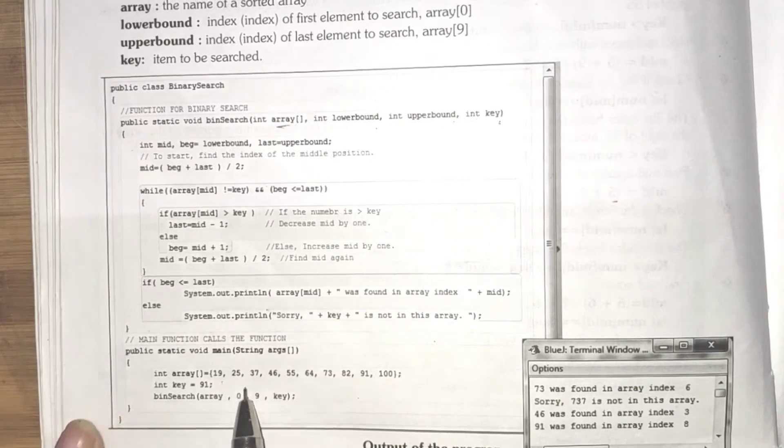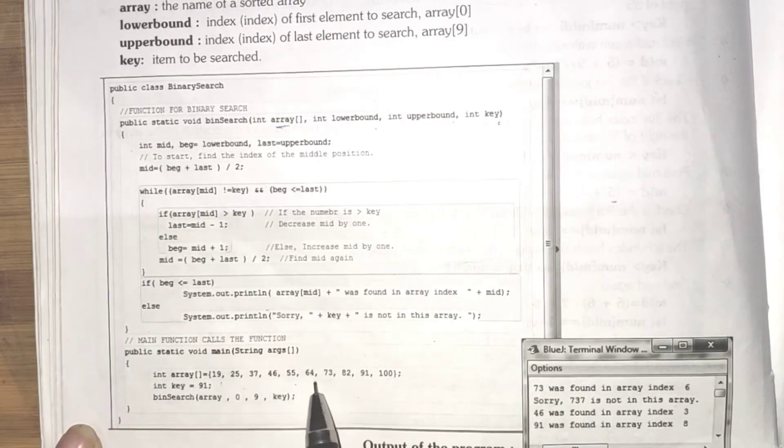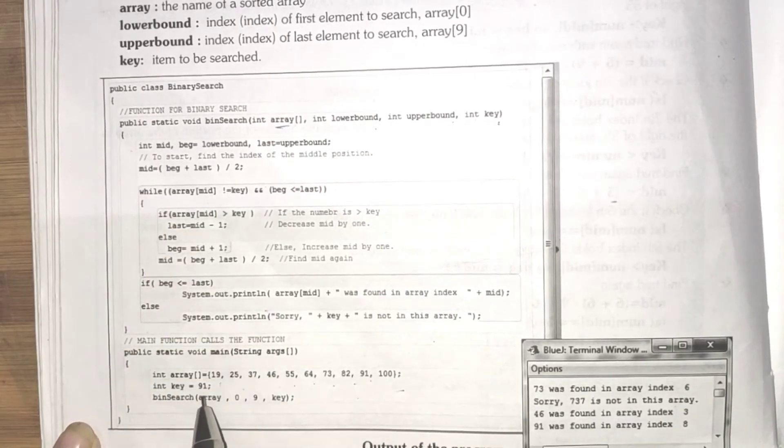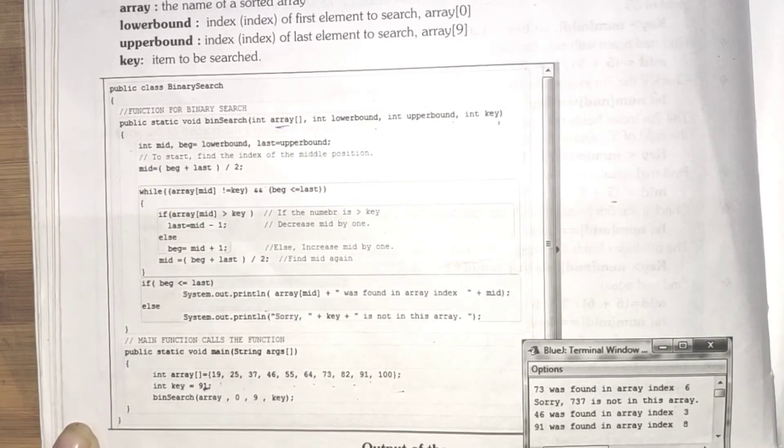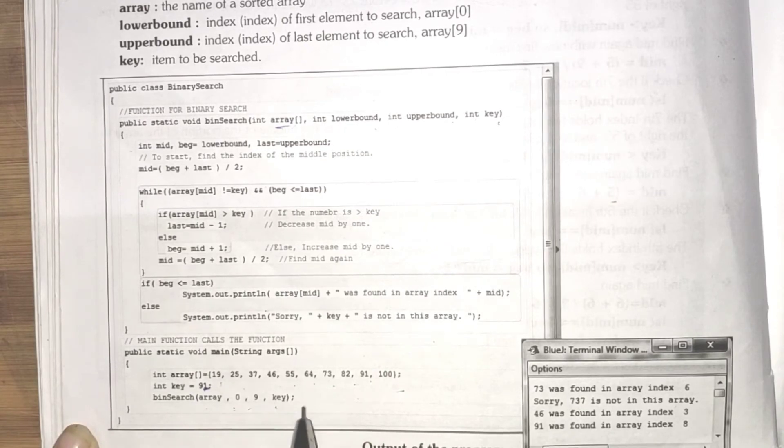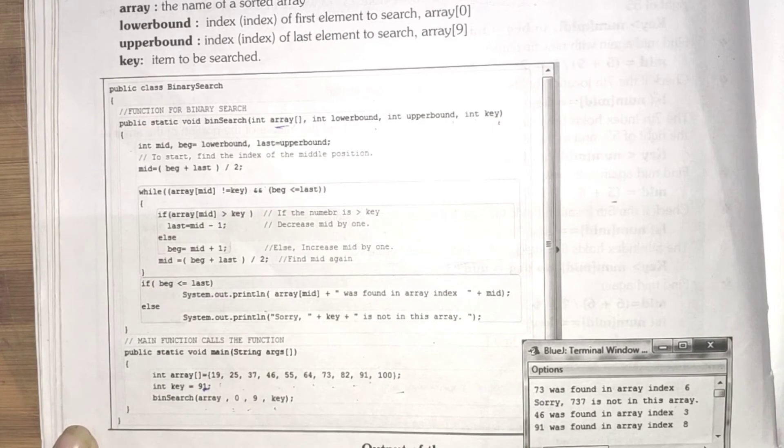they display the array list, that is 19, 25, 37, 46, 55, 64, 73, 82, 91, 100. And we want to search the element 91. And in the binary search, array 0, 9, key. So, this coding we had written, let's run this coding in the computer system and let's check what output we will get.